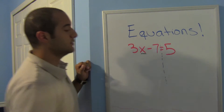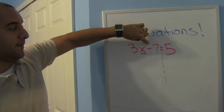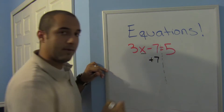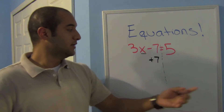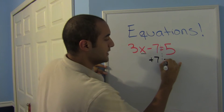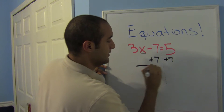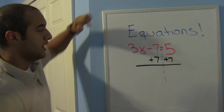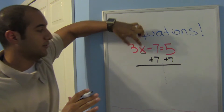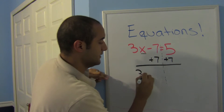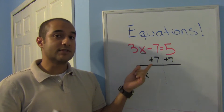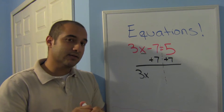To get rid of the minus 7, we add 7. Remember, you have an equation, so you need to keep things balanced — add 7 on the left side, add 7 on the right side. Notice that I didn't touch that 3x, so I'm going to bring it down. Negative 7 plus 7 is 0.